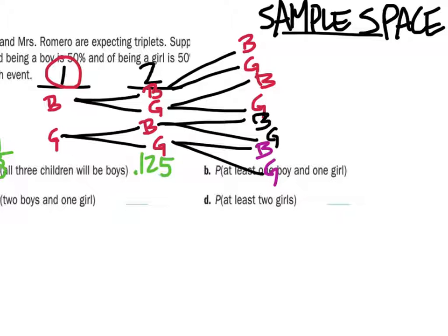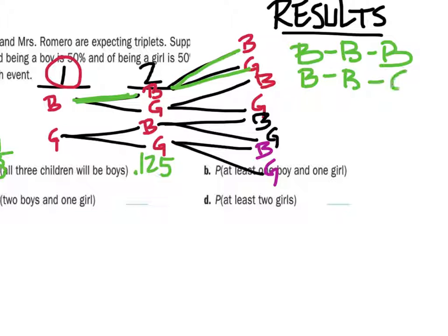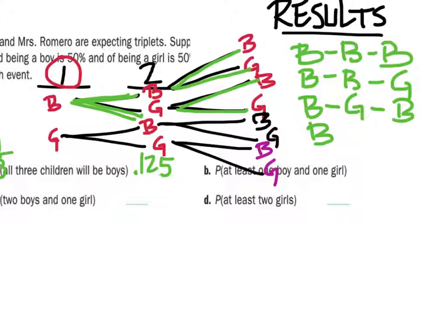So I am going to list these all. We can see the top one — if we trace it back, we have B, B, B. So the first one is BBB. The next one is BBG. The next one is BGB. The next one is BGG.